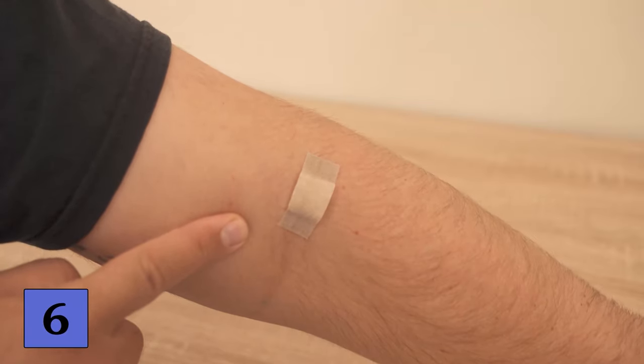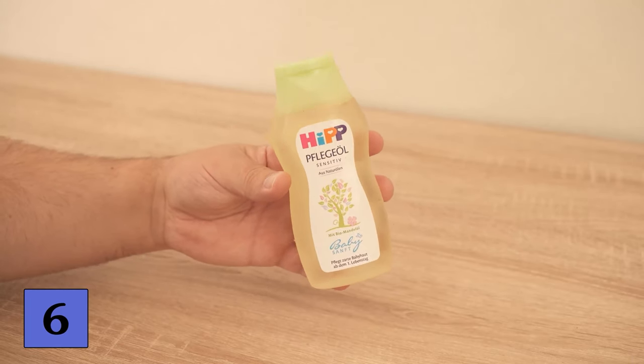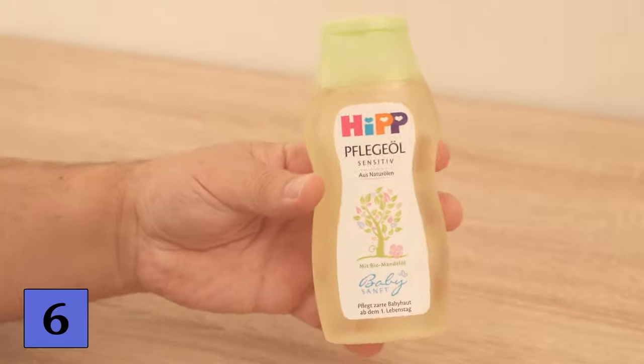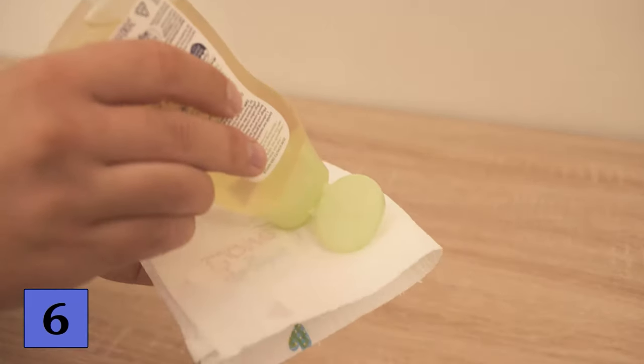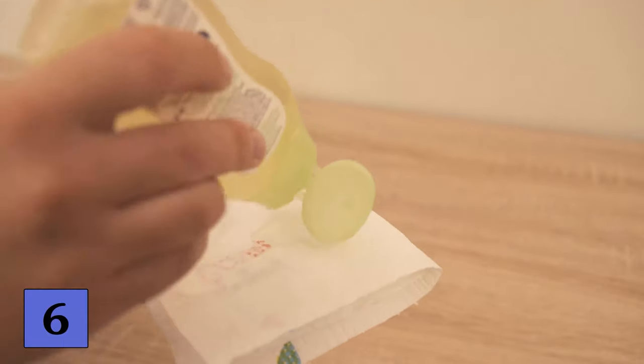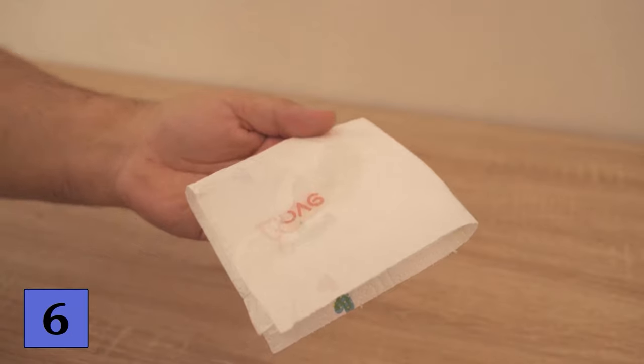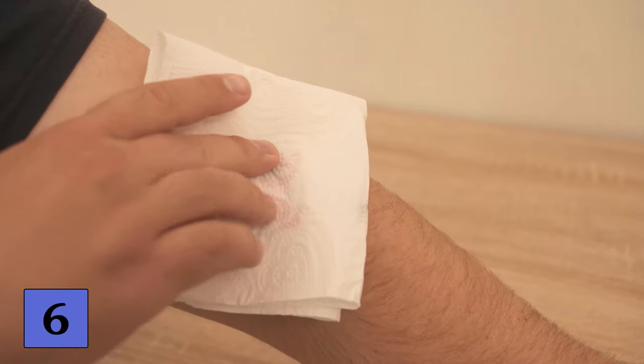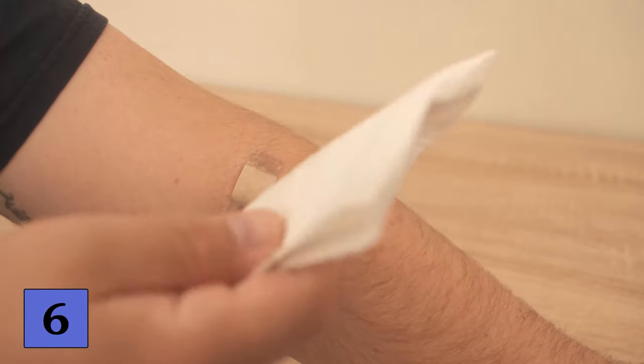Are you the type who just pulls the plaster off quickly or do you do it slowly? Both are very unpleasant, but you can get around it with a little baby oil. Grab some baby oil and a cloth as usual. Put some of the baby oil on it and then we can go straight to our plaster. Because what we want to do now is to soften the plaster with the baby oil because the plaster sticks because of the glue, and we can loosen this with some baby oil.